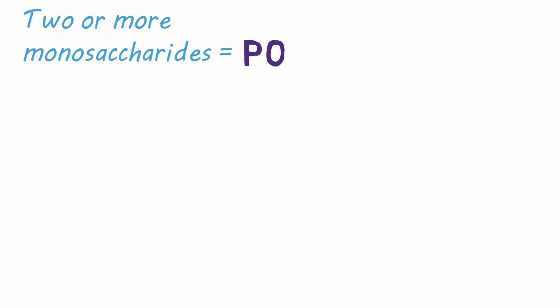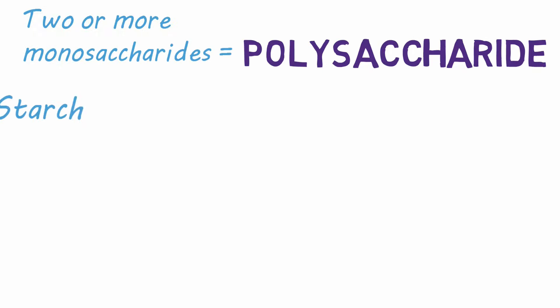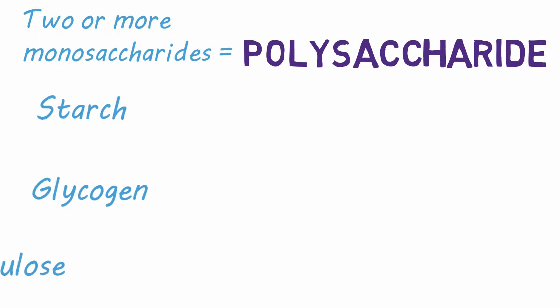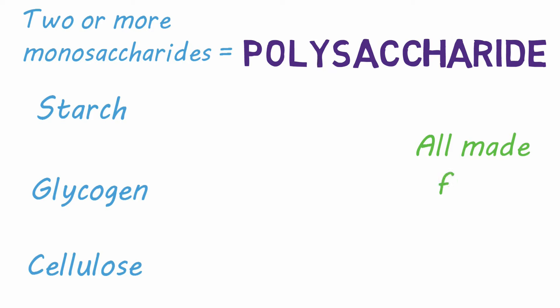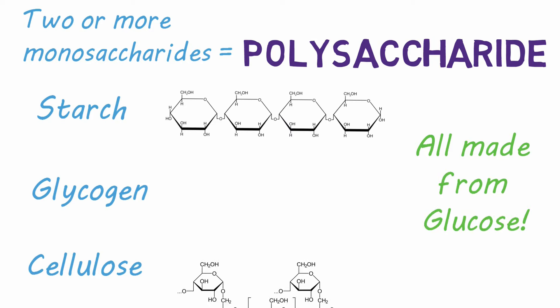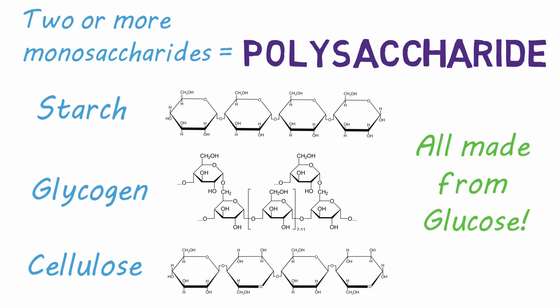When more than two monosaccharides are combined, a polysaccharide is formed. Starch, glycogen, and cellulose are all examples of polysaccharides, and they're all made of the same monomer, glucose. The way glucose is bound together determines whether the resulting saccharide is starch, glycogen, or cellulose.